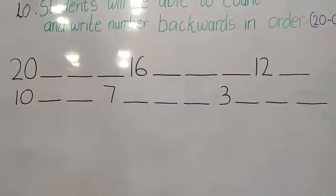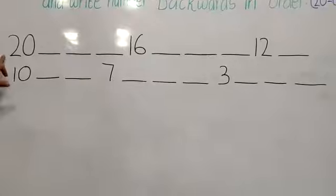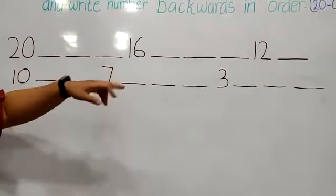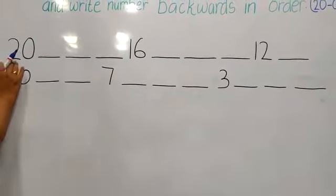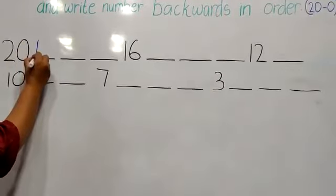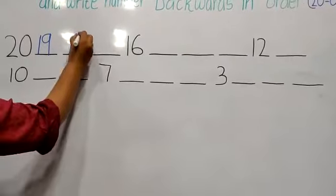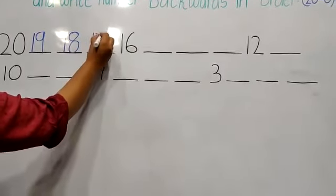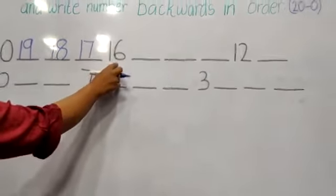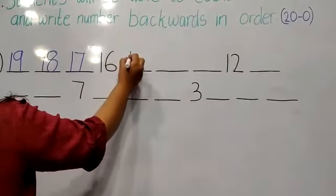Now we start with our exercise. So let's count and write our numbers backwards. 20, 19, 18, 17, 16, 15.